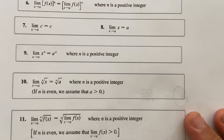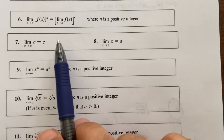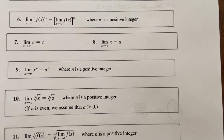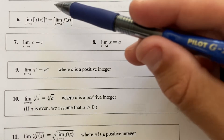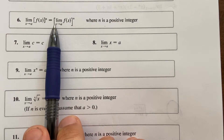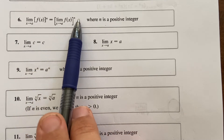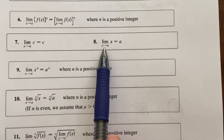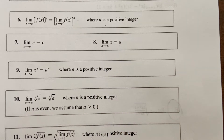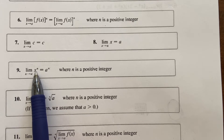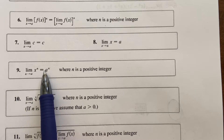Some more examples that will come up: if you have the limit of a function raised to a positive integer power n, you can actually bring the limit within that power — so instead of doing the power and then the limit, you can do the limit and then the power. If you have the limit of a constant, that's just the constant. If you have the limit of x as x approaches a, that's just a. And the limit of x^n as x approaches a is just a^n. For the nth root, you can bring the limit inside.